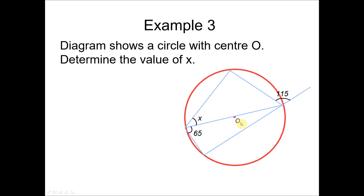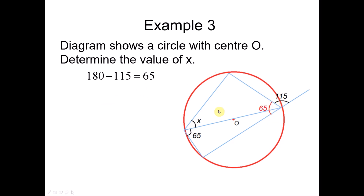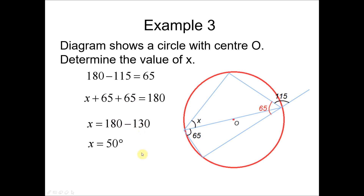Example 3: the diagram shows a circle with center O. Determine the value of X. The four points form a cyclic quadrilateral, so the total of the opposite angles equals 180. First, since this is a straight line, we find the interior angle as 180 minus 115, which equals 65 degrees. Hence X plus 65 plus 65 equals 180, and solving gives X equals 50 degrees.